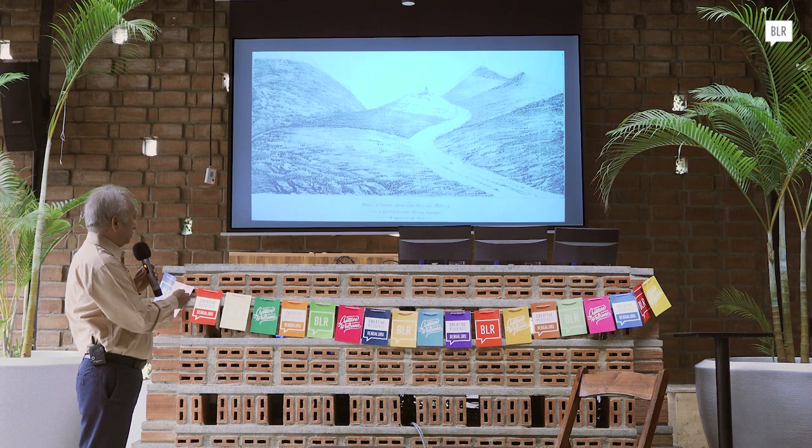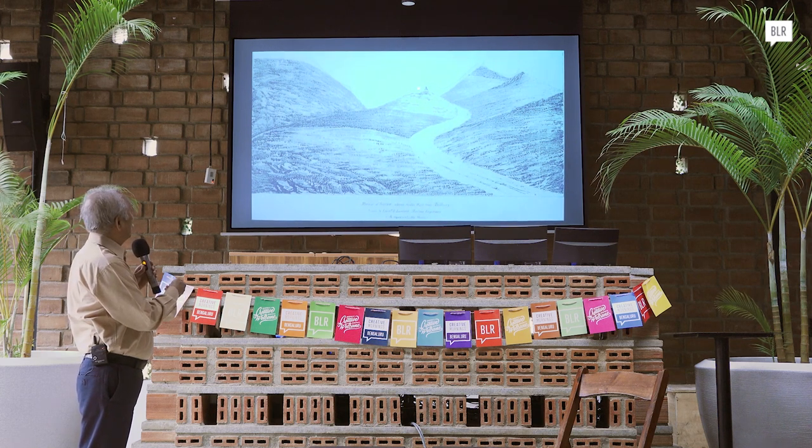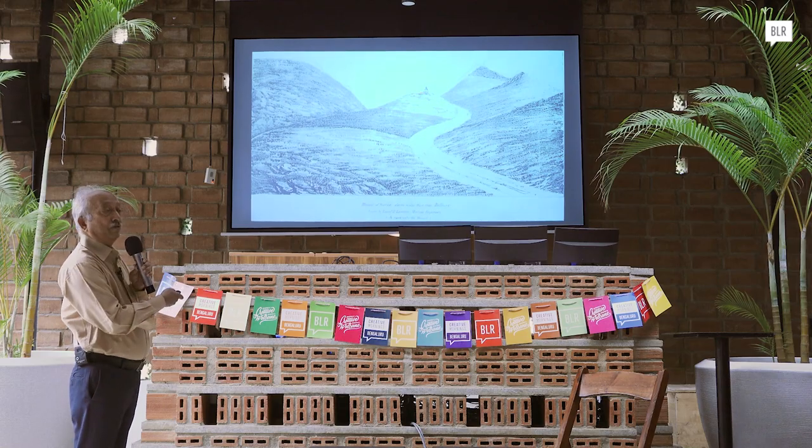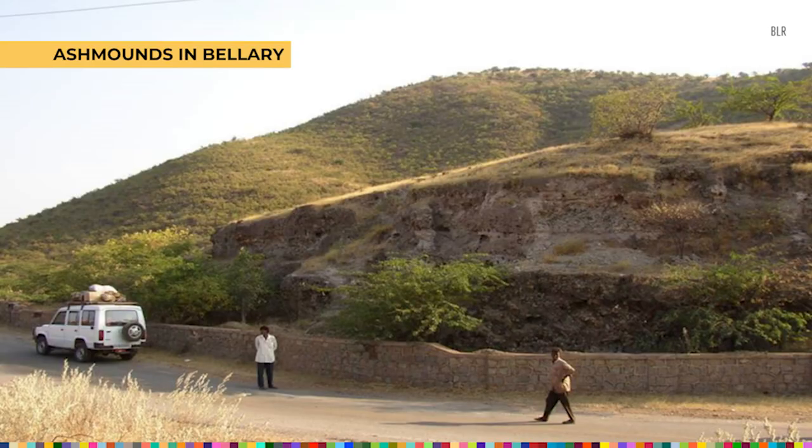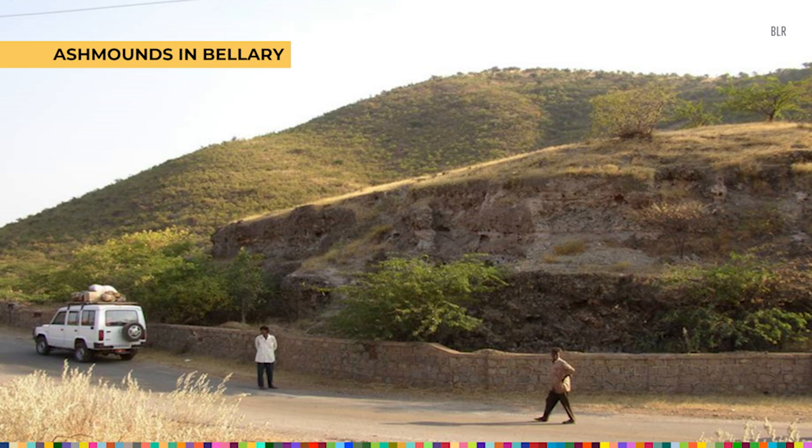It is called the Greenstone Belt or Sandur Schist Belt, a pass between Bellari and Hospet. It is now very close to the Jindal Vijayanagara steel plant on the western side and the Bellari thermal power station on the eastern side of this particular pass. In the middle of the pass you see this particular mound as it existed 220 years ago. This is the time when the pyramids were built in Egypt. Such mounds were also coming up in this part of the Indian subcontinent.